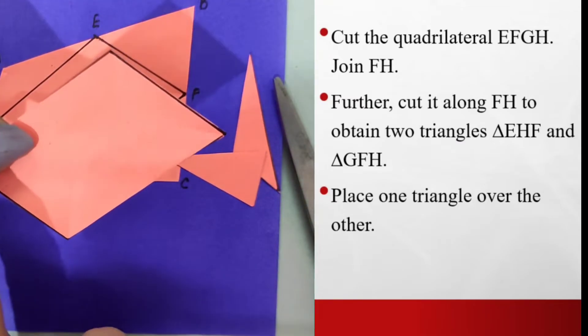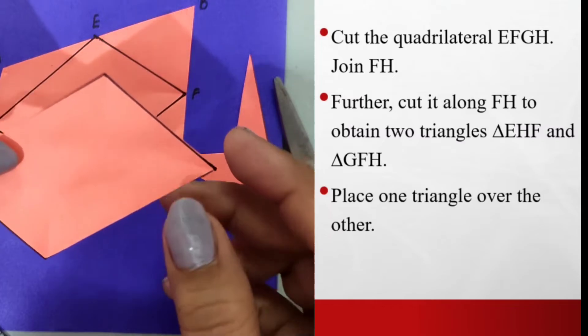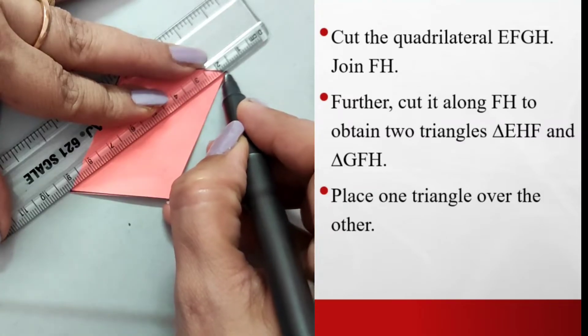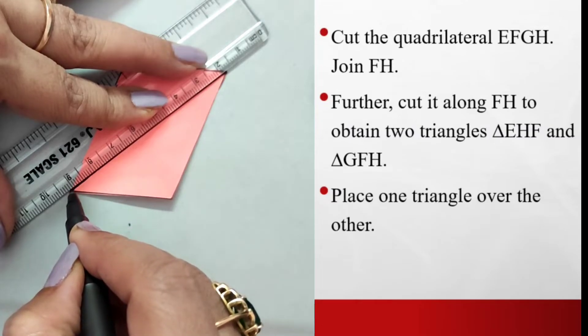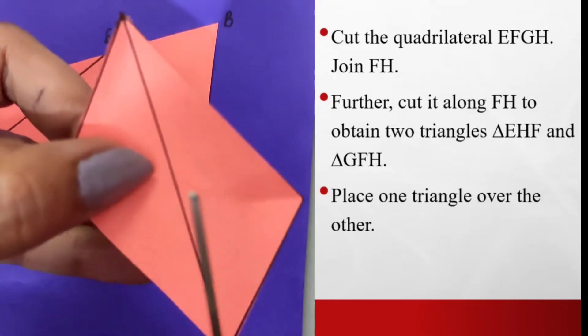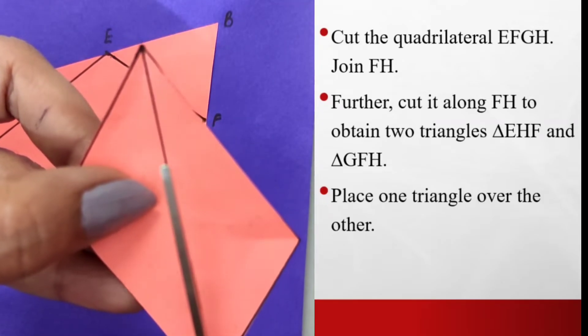What I do is I join F and H point. So one of the diagonals I will join. So I join FH over here. Now I will cut along FH and obtain two triangles. So I am just cutting it along this diagonal.